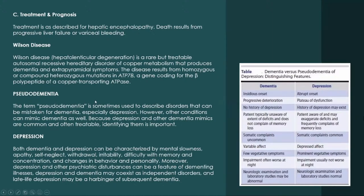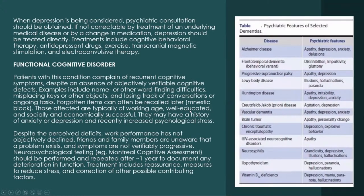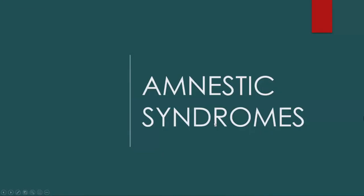Wilson's disease can cause liver failure, dementia, and choreiform movements. Pseudodementia is false dementia — usually due to depression. Depressed patients start forgetting things and show behavioral and personality changes, when in reality they are just depressed. Treatment is antidepressants. Wilson's disease shows nodular degeneration of the liver with copper deposition and the Kayser-Fleischer ring — copper deposits at the periphery of the cornea — along with dementia and choreiform movements.